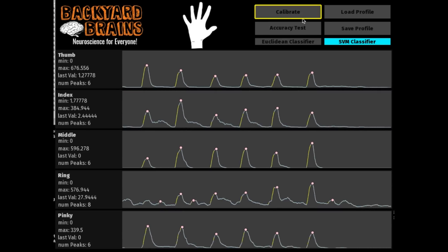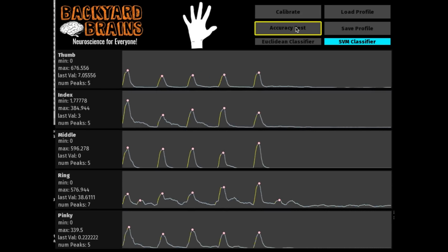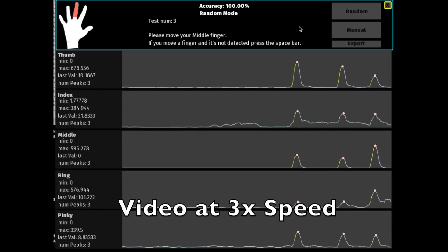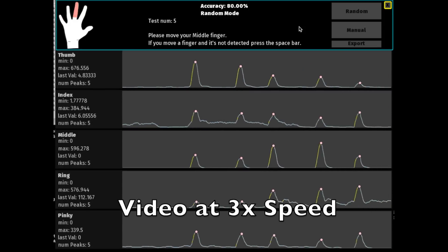By clicking on the accuracy button, you can calculate the accuracy. The software will tell you to move certain fingers one at a time, and this will be compared with the output of the decoding algorithm.